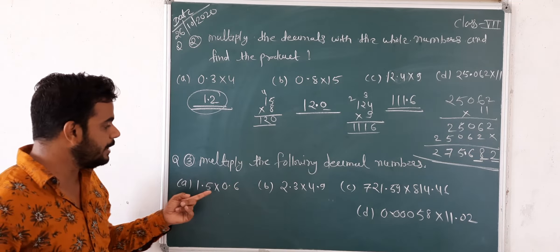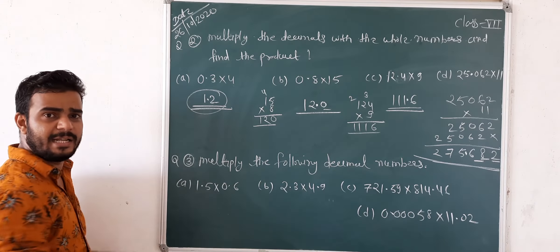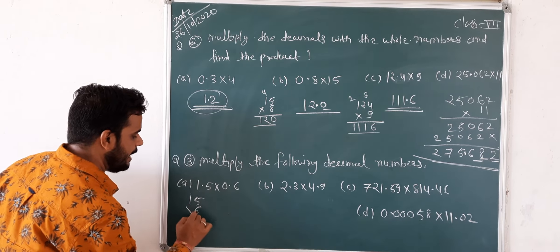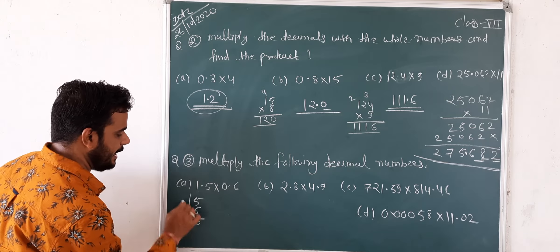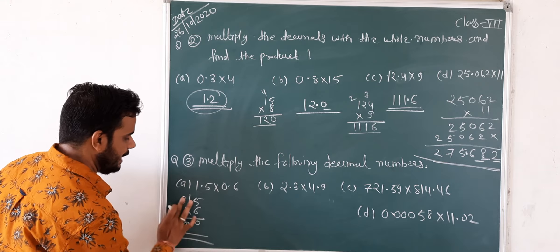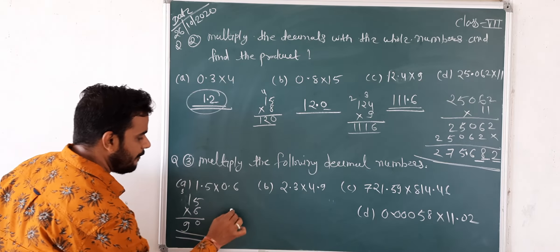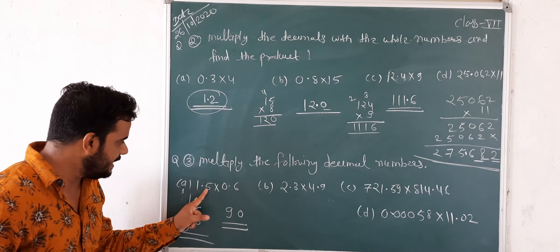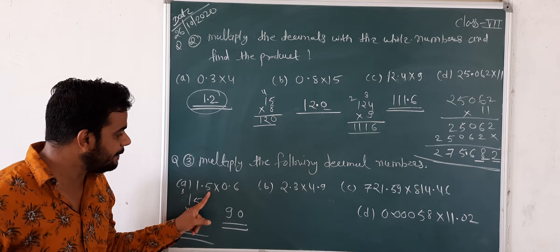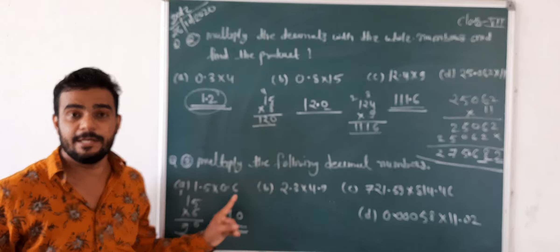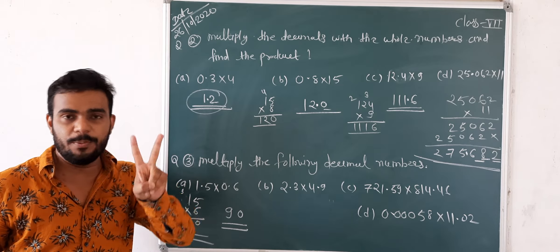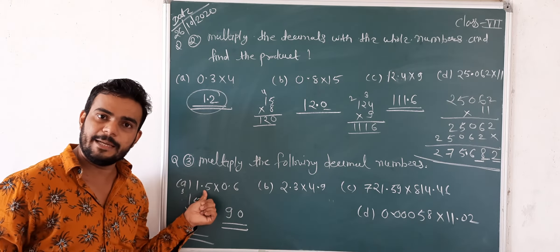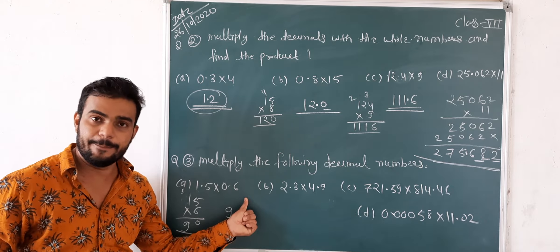Next one, 125.06 x 11. Multiply: 11 x 6, 11 x 0, 11 x 5, 11 x 2, 11 x 1. Answer is 1375.66. Point ke baad two places are there, so remove two places and put the point: 1375.66. Same as the next question is there, but here 2 decimals are there. So no problem. We will count both decimals and afterwards put the place.